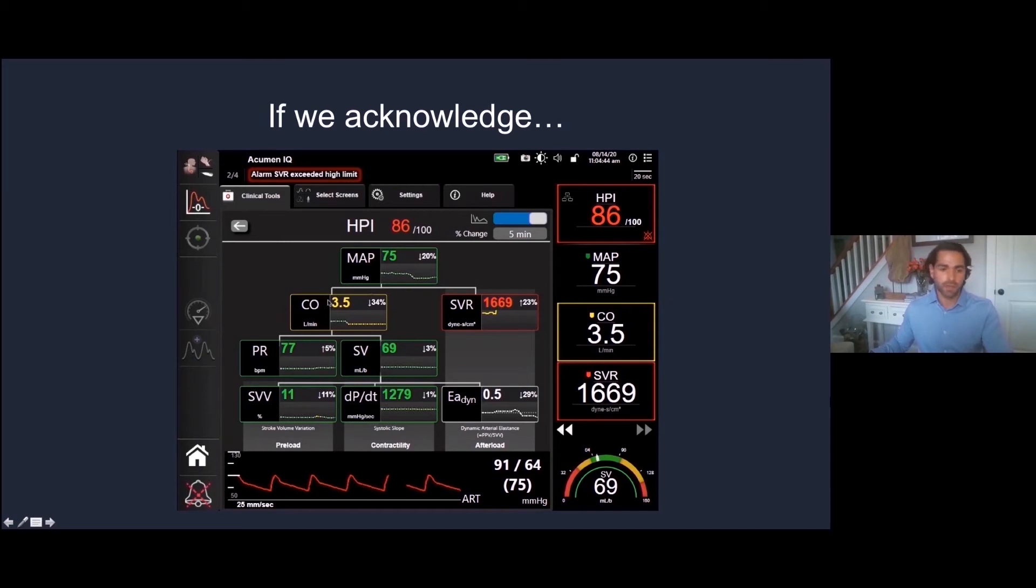On the left side in this yellow box, your cardiac output at 3.5. Going down into the factors, you see your pulse rate, stroke volume, stroke volume variability, DPDT which is your contractility, and EADI which is your dynamic elasticity of your arterials. It's nice color-coded to tell us what the problem is.